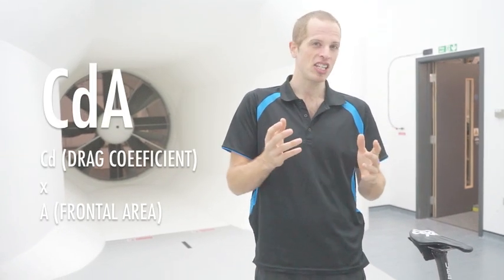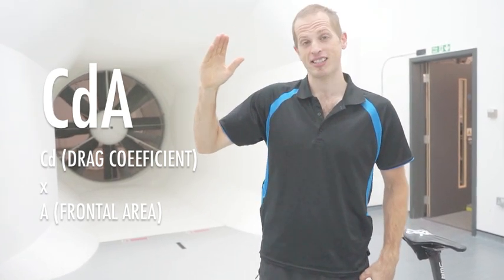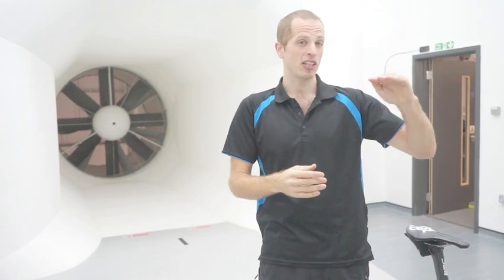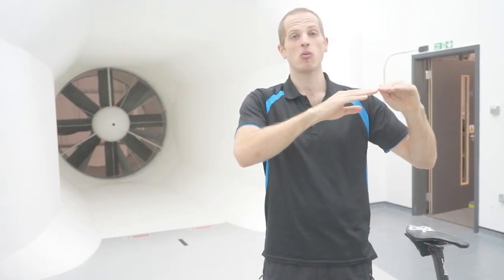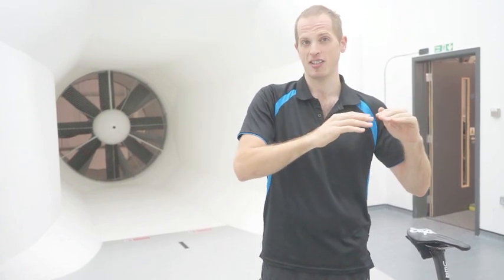When we're measuring aerodynamic drag, we use a number called CDA. The CDA represents how aerodynamic you are. The higher the CDA, the less aerodynamic, and the lower the CDA, the more aerodynamic. What this means is that if you reduce your CDA, then if you're travelling at a consistent speed, you will require less power output to travel at that speed compared to someone with a higher CDA.